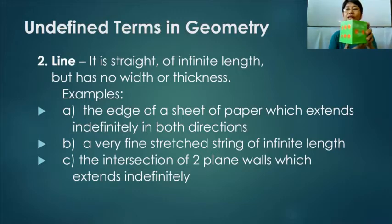So if we imagine the two plain walls to be this and this side, this is the intersection, and it represents a line.